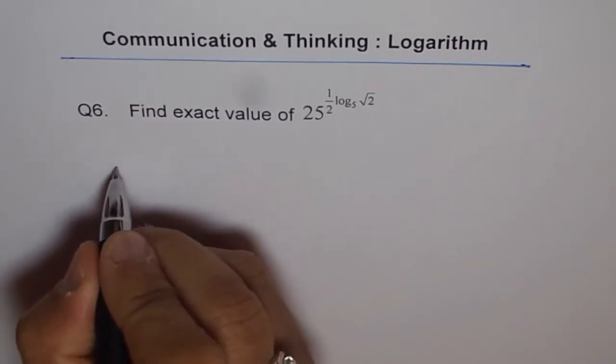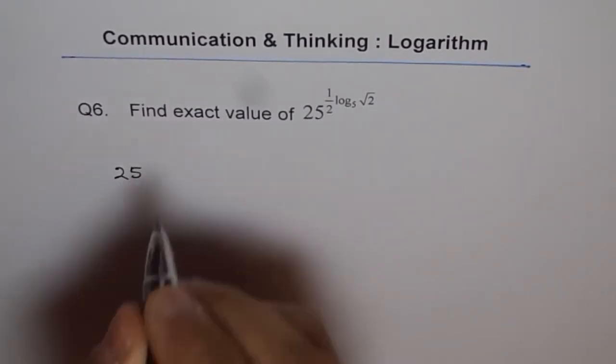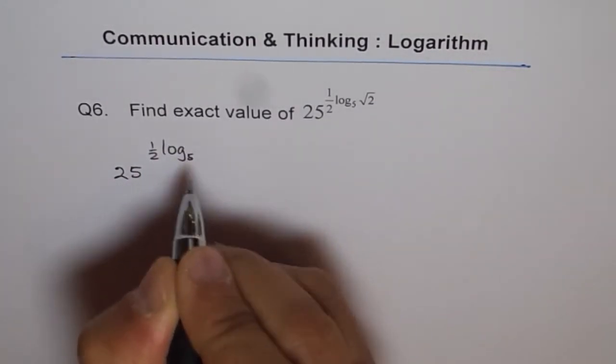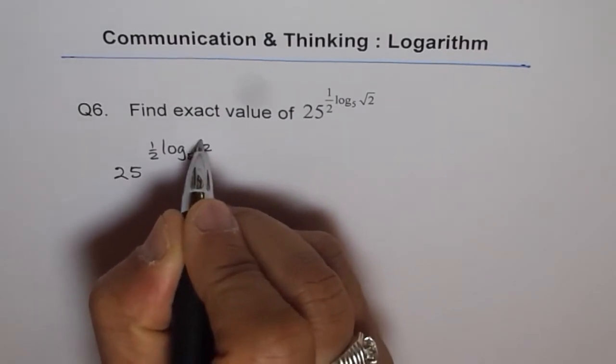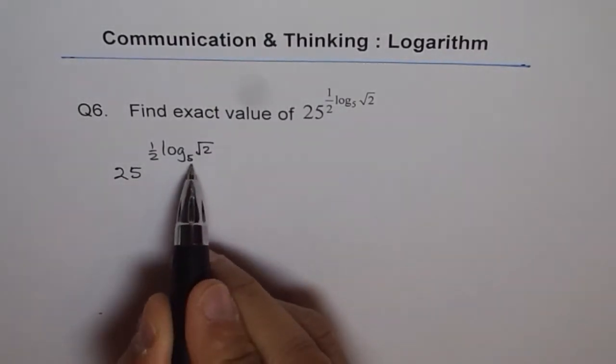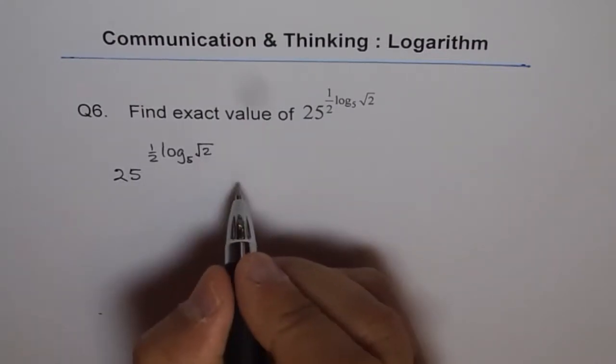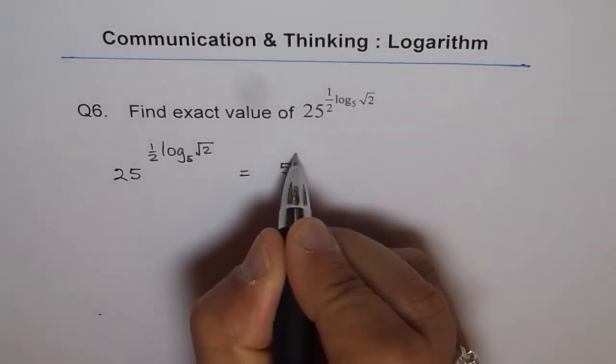So let's try to do it. 25 to the power of half log to the base 5 of square root 2. Now since this base is 5, we would like to write 25 as 5 to the power of 2. So we can write this as 5 to the power of 2.